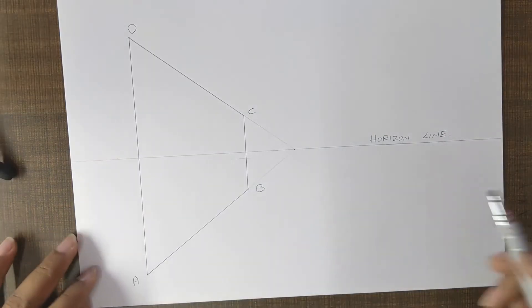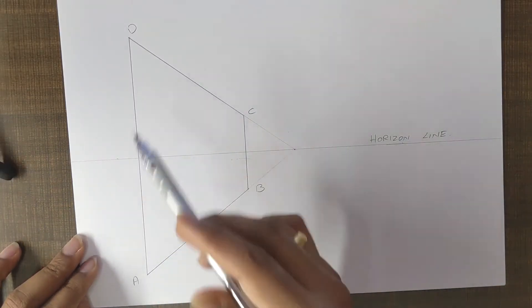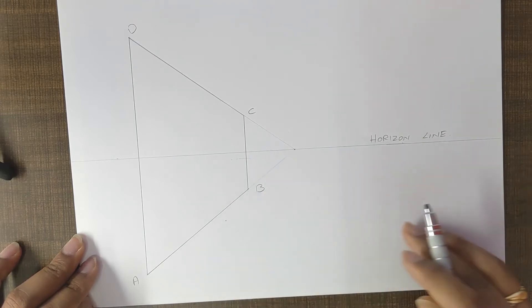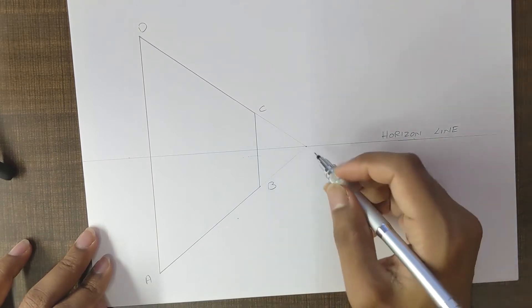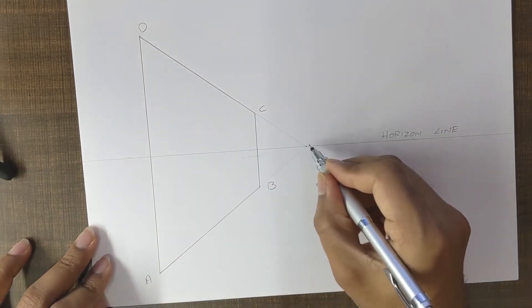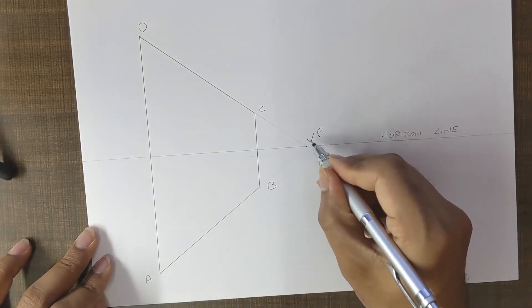Alright, so here we have a plane ABCD in a single point perspective and we have our horizon line. This plane is converging to a point on the horizon line which is called the vanishing point.